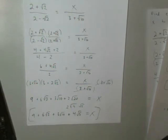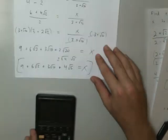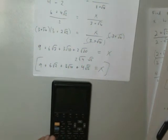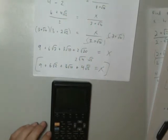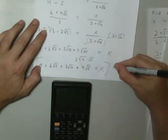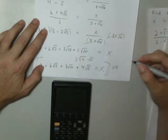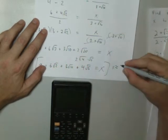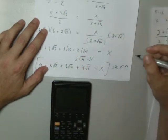All right, so to round to the nearest tenth, all I'm going to do is I'm going to punch this into the calculator, and I can do this at one line. All right, so here we go. 9 plus 6 root 2 plus 3 root 10 plus 4 root 5. And that's approximately equal to, so to the nearest tenth, it reads 35.916, which is 35.9.